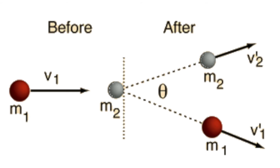Picture a ball heading in the direction of another ball with the same mass. In an elastic collision, both objects will travel in different directions than they started.